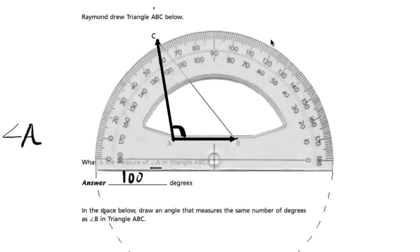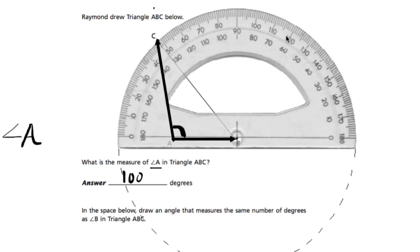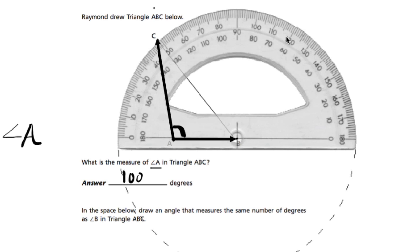So again, we line up our protractor to hit the intersection point like that. There it's lined up. And this time we're using the outer track of numbers because the angle's opening this way. The second line's over here.